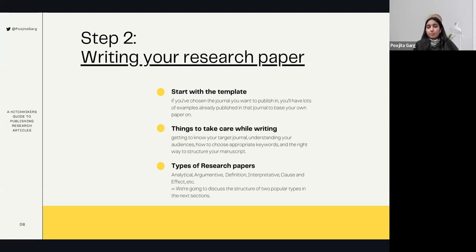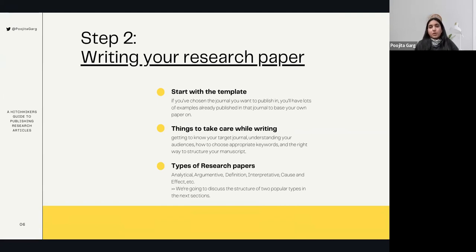You can start with a template. Most journals provide a LaTeX or Word template that will at least show you the formatting specifications — font size, sections, page limits, reference style, et cetera. There are a lot of things to take care of, but it's always an iterative process. You make a first draft, iterate over it, and make other drafts.